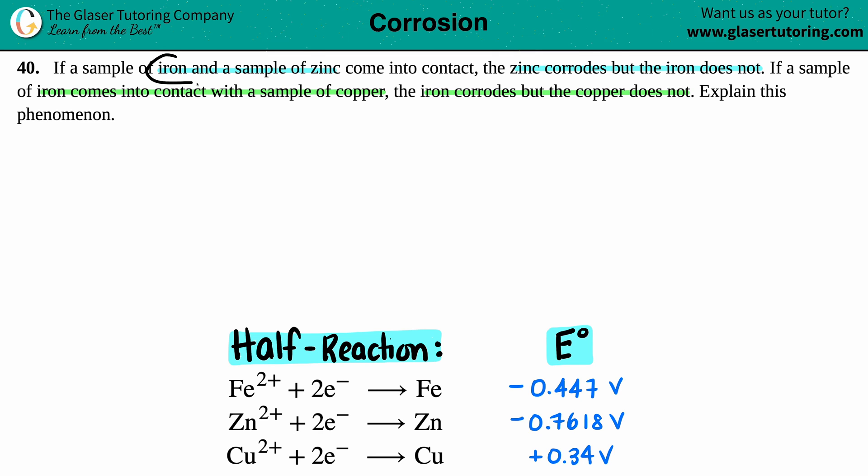We first want to identify when iron and zinc are coming together, the zinc is corroding. Now when we talk about corrosion, we're talking about redox reactions. Corrosions always occur because of oxidation, so whoever is corroding is always the one that is oxidizing, and oxidizing always comes from the anode in a spontaneous reaction.